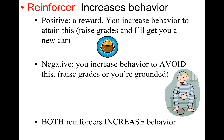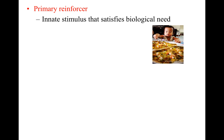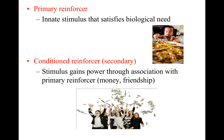Both reinforcers always increase behavior — that's how you keep reinforcers separate from punishment. A primary reinforcer satisfies a biological need, like food or water. A conditioned or secondary reinforcer gets its power through psychological associations — for instance, money, friendship, and affiliation are all secondary reinforcers of behavior.